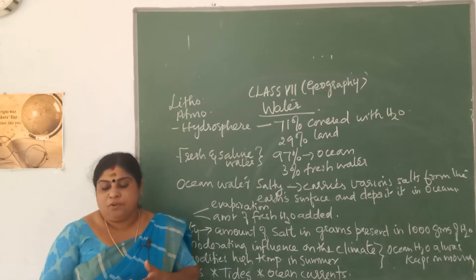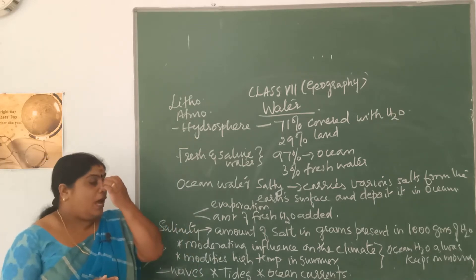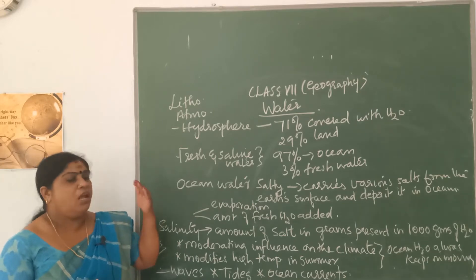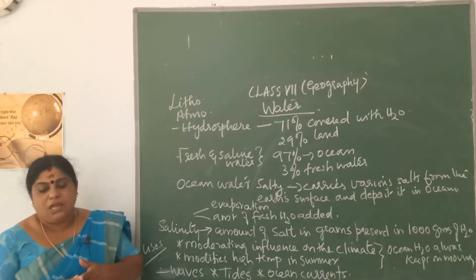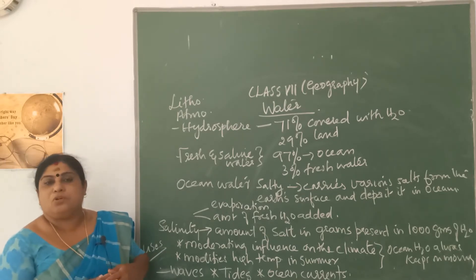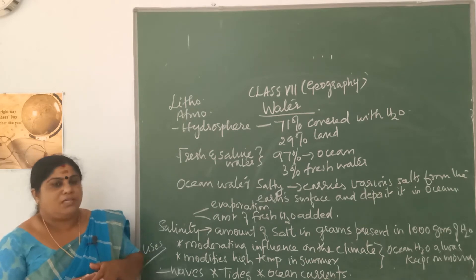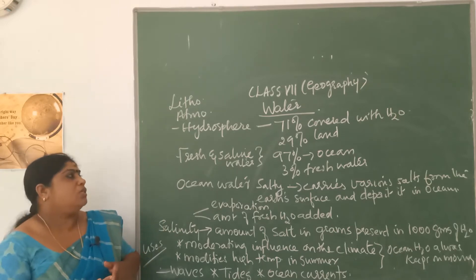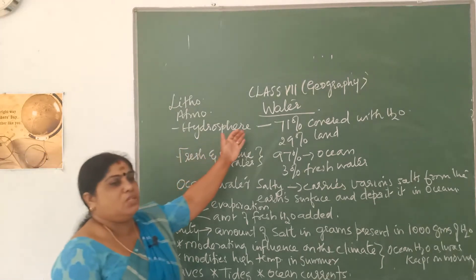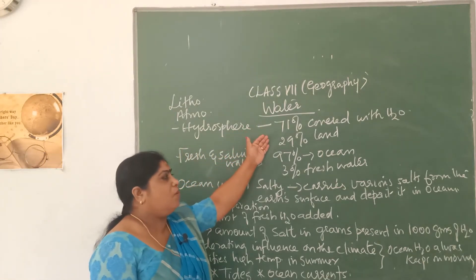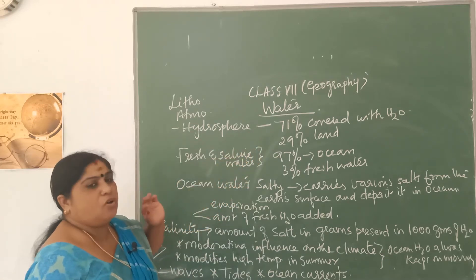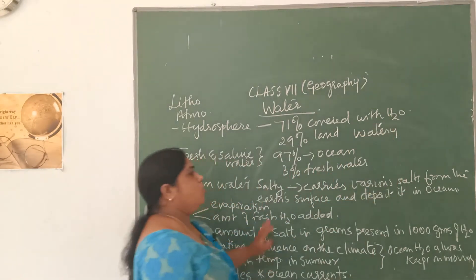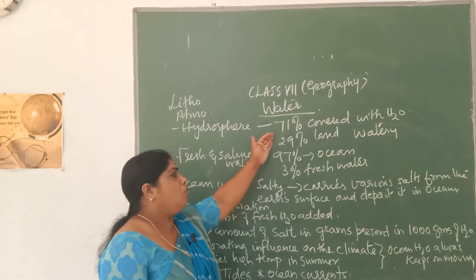Water in different forms also acts as a cooling agent of the atmosphere. We have a moderating climatic condition mainly because of these water bodies on the earth. These water bodies also help in the promotion of trade, and they provide us food like fish. 71% of the earth's surface is covered by water and only 29% comprises land. That is why you call earth a watery planet.